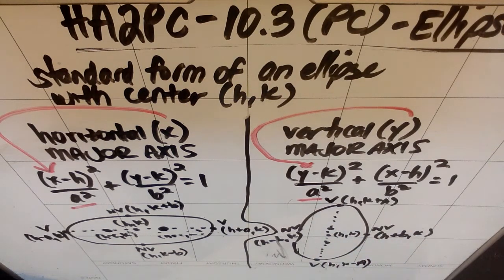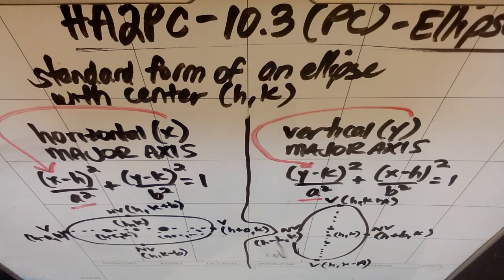So what we're going to do is some examples first where we start by graphing ellipses. After we work on graphing them, then we'll start talking about how to actually write these equations from other information. But we should definitely start with this.